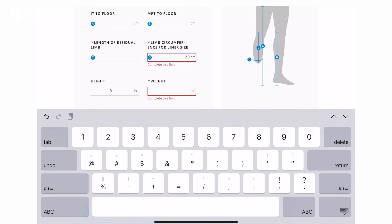This patient has a size 28 seal-in X-liner. His weight is 180 pounds and he is 5 feet 10 inches.